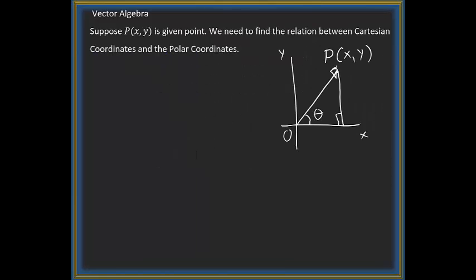We are given a point P(x,y). We need to find the relation between Cartesian coordinates and polar coordinates. O is the origin and P(x,y) is the point. The vector OP will be simply xi plus yj, or (x,y).